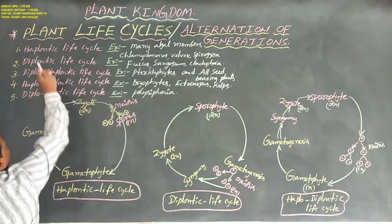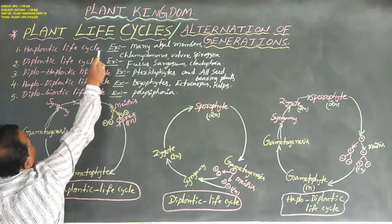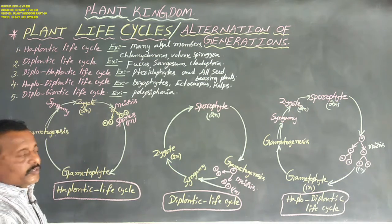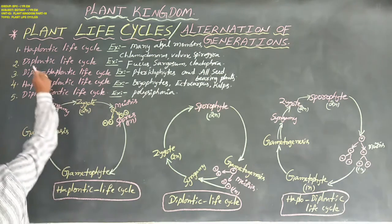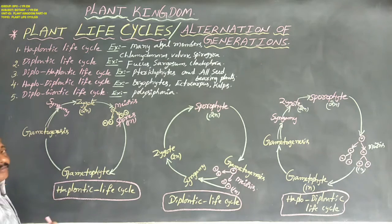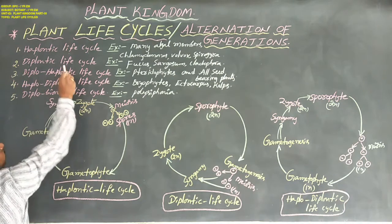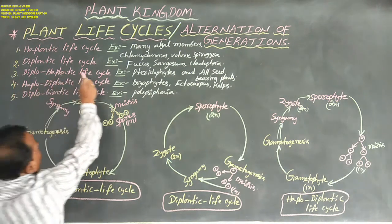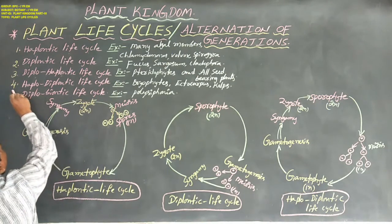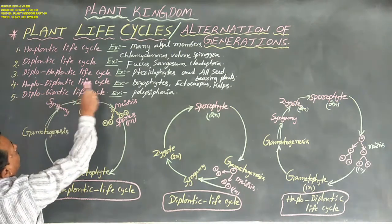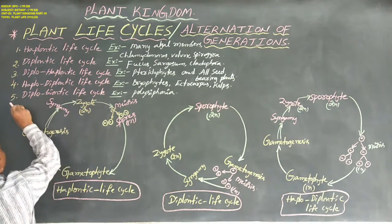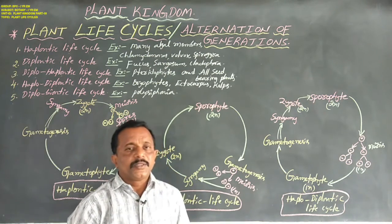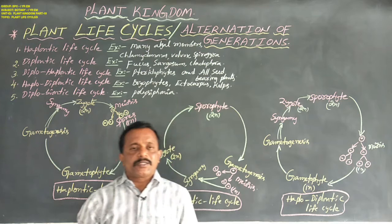In this plant life cycle, there are 5 types. First one: haplontic life cycle. Second one: diplontic life cycle. Third one: haplo-diplontic life cycle. Fourth one: haplo-diplontic life cycle. Fifth one: diplo-haplontic life cycle.